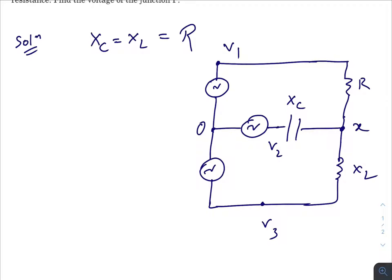In alternating circuits you can represent potentials in vector form. You can write the impedance of a circuit in complex form like A plus iB, where A consists of the resistance part and B consists of the reactance part.